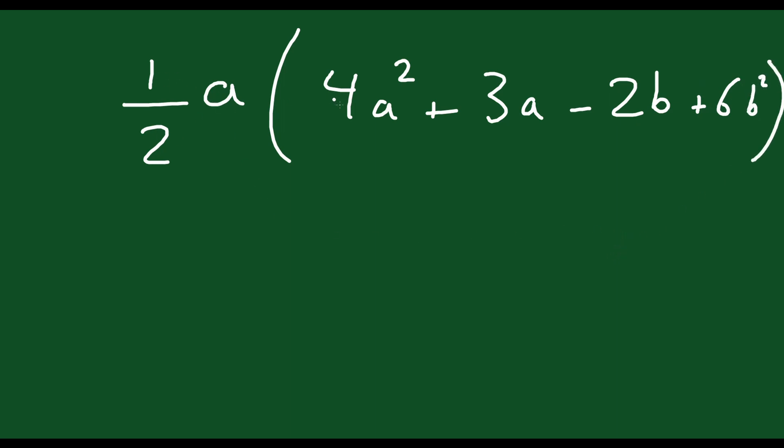(1/2)a times 4a². What is that? Well, (1/2) times 4 is just 2—it's like saying 4 divided by 2. And a times a² is a³. So your first term is 2a³.